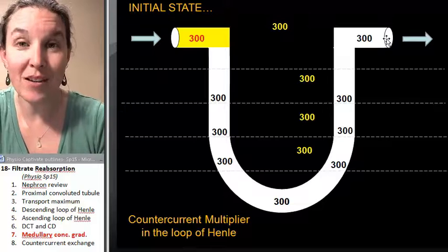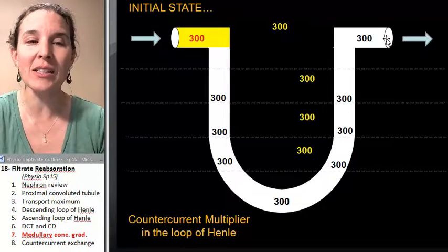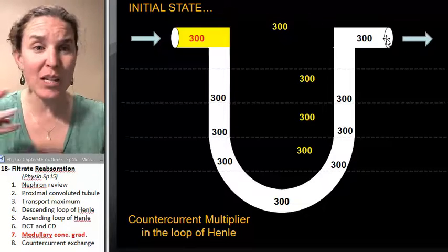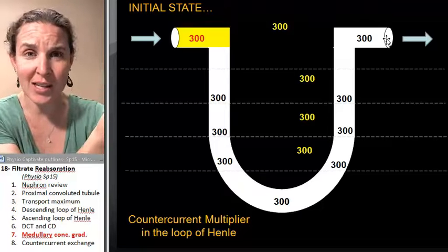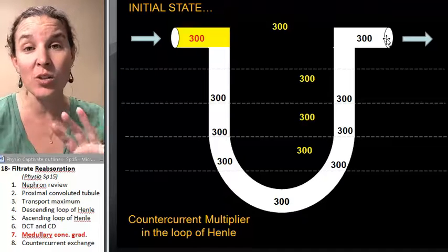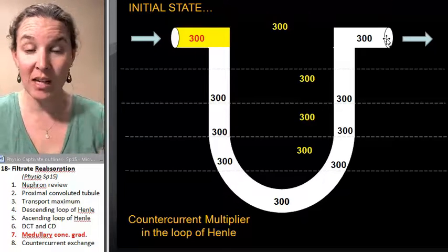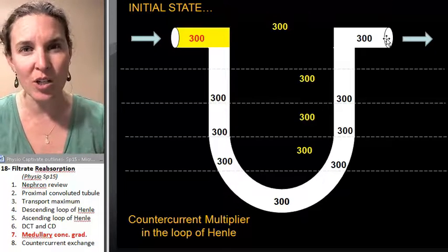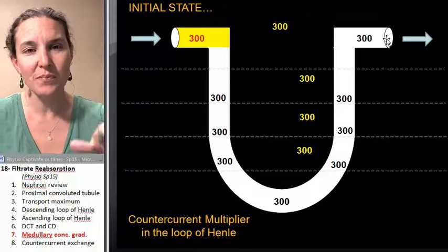Well, this is drawn differently. It's drawn differently just to clarify. We don't need to show the juxtaglomerular apparatus. We don't need to do any of that stuff. All I want you to do is imagine the scenario before the concentration gradient is established.